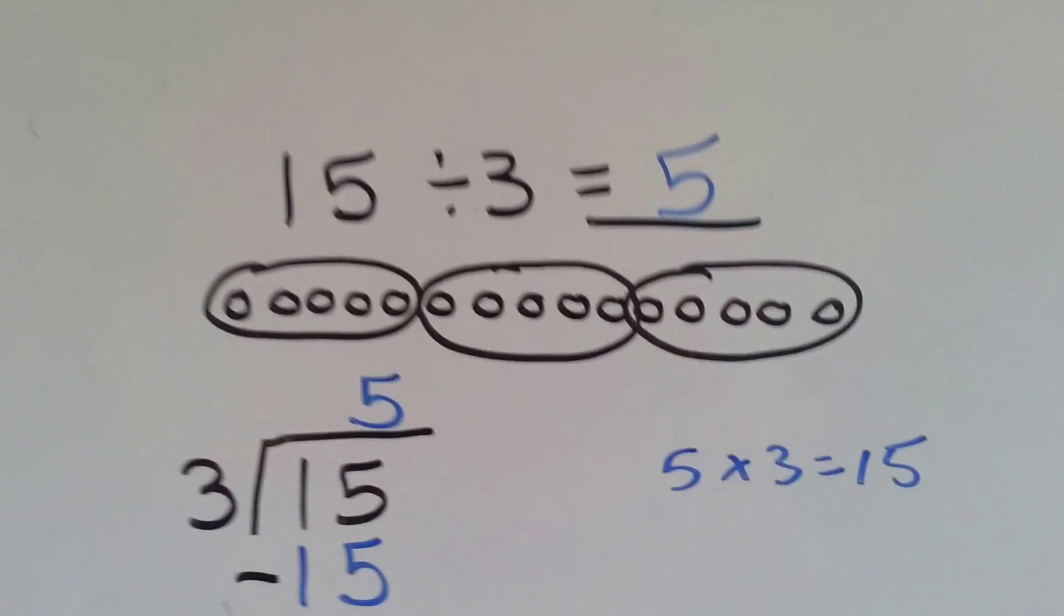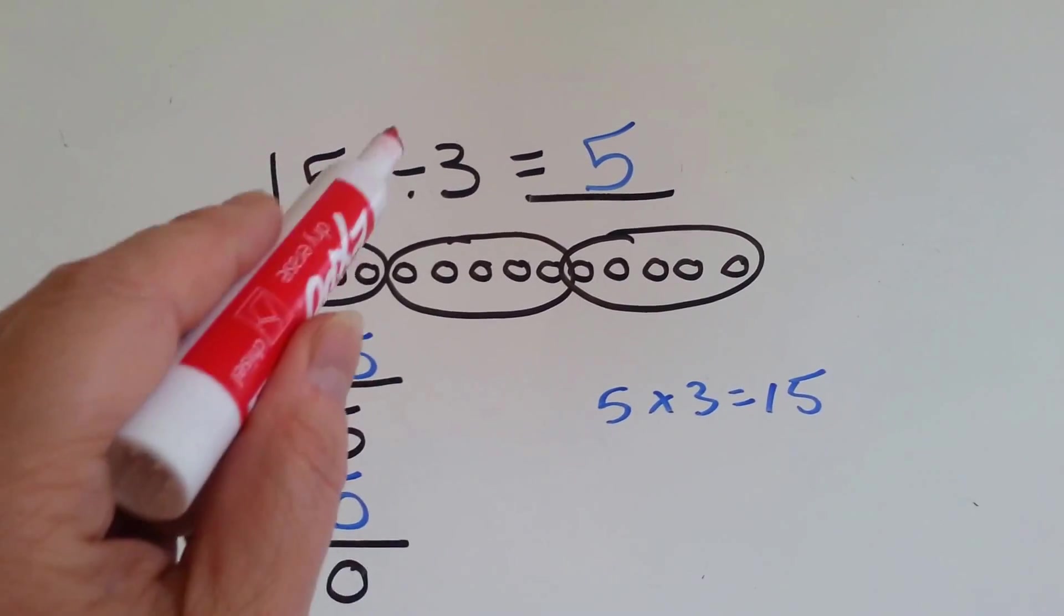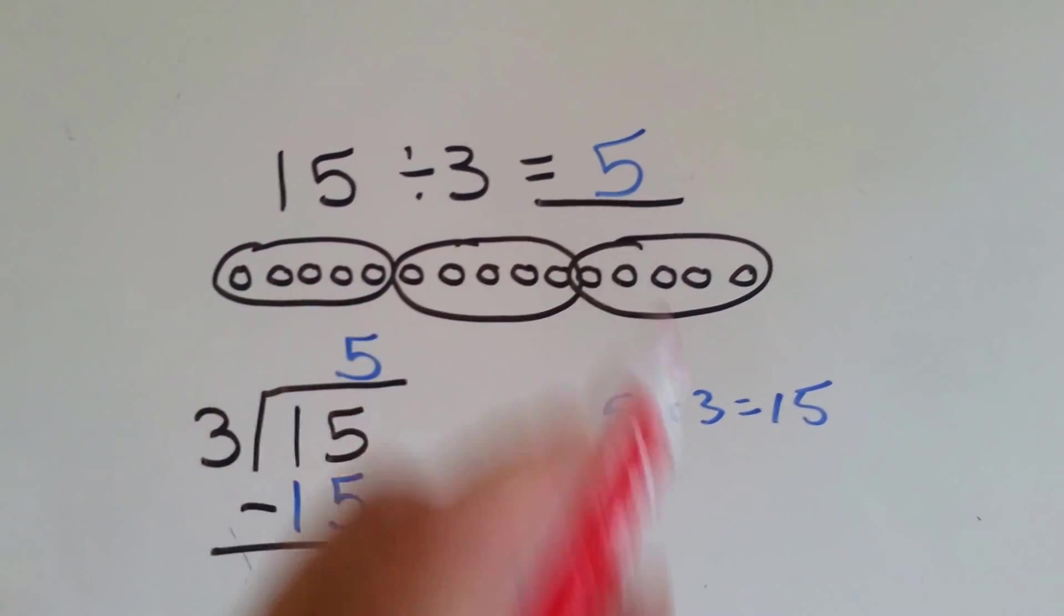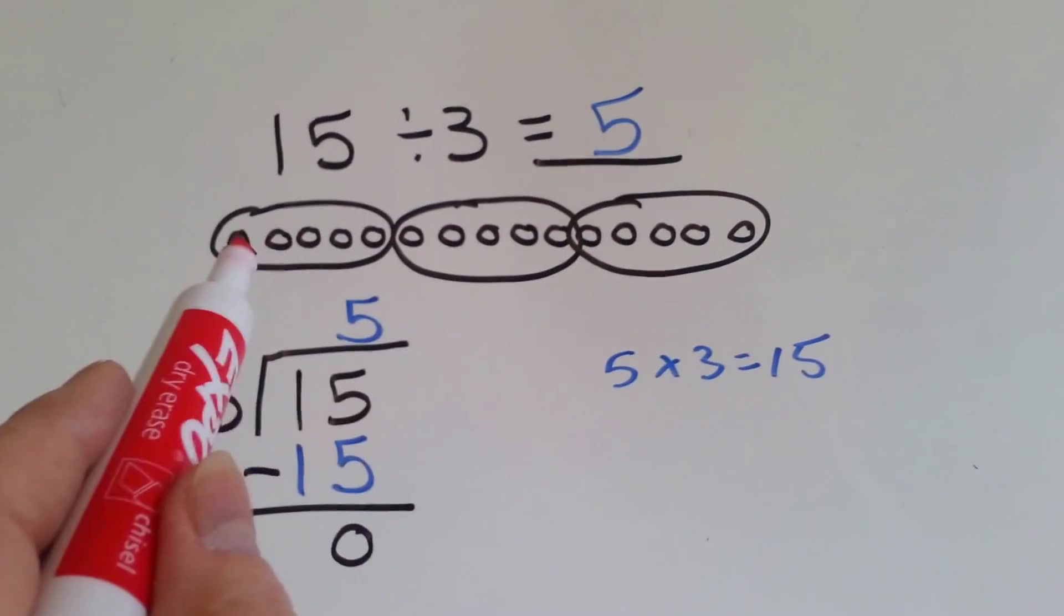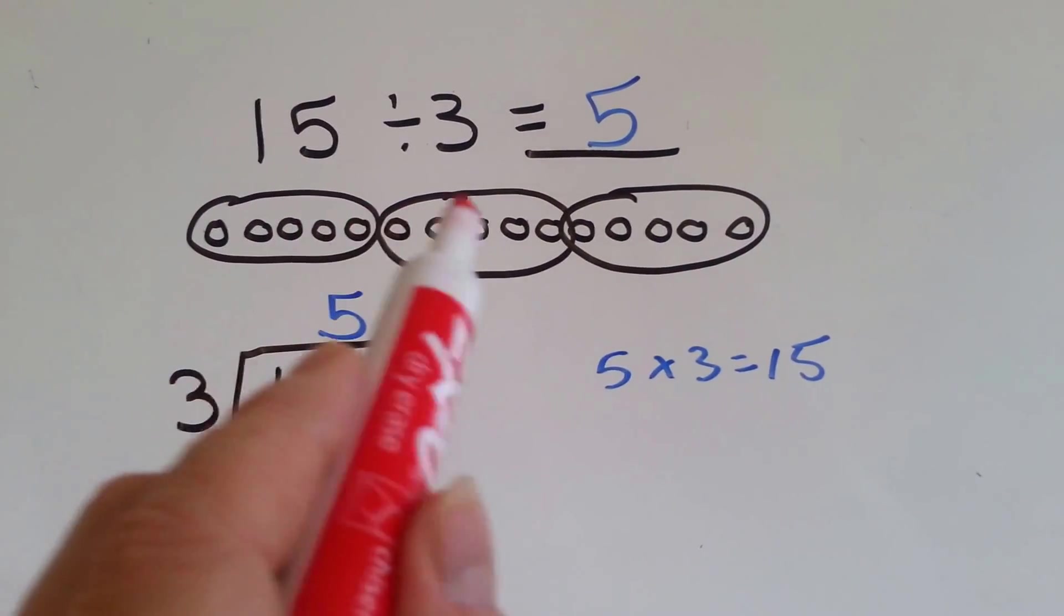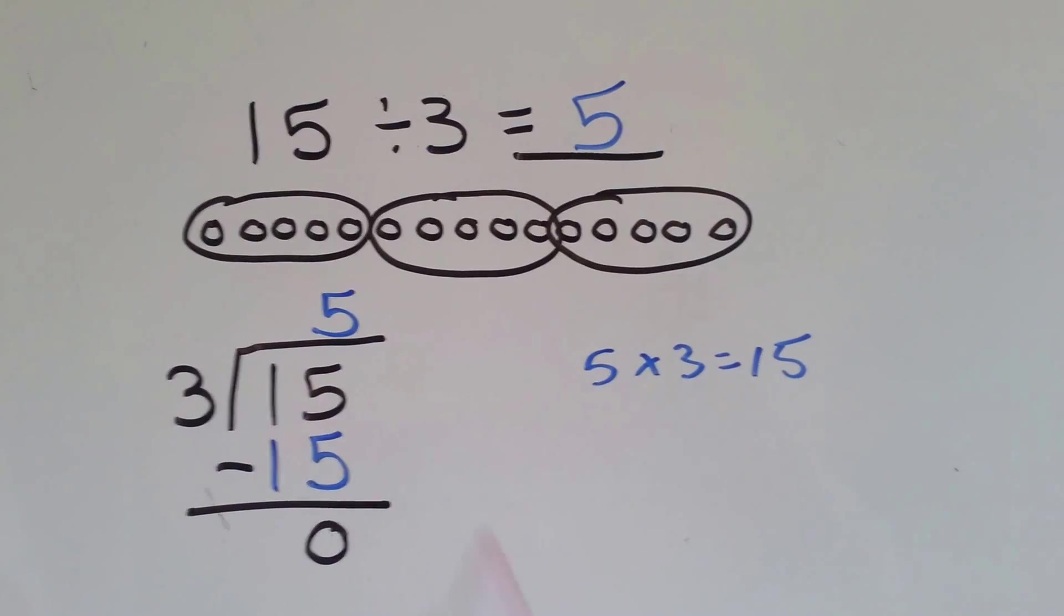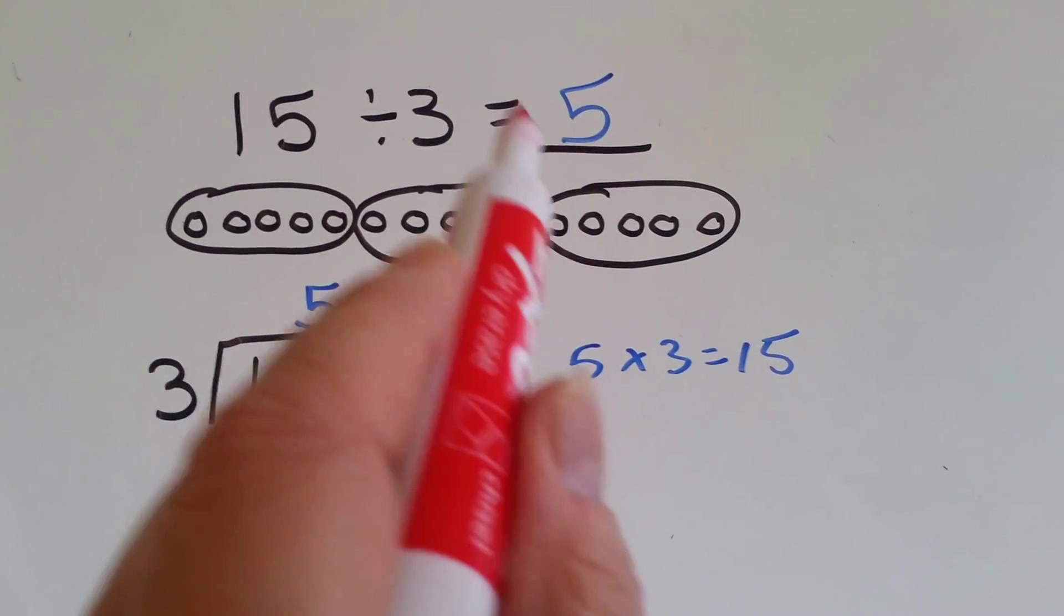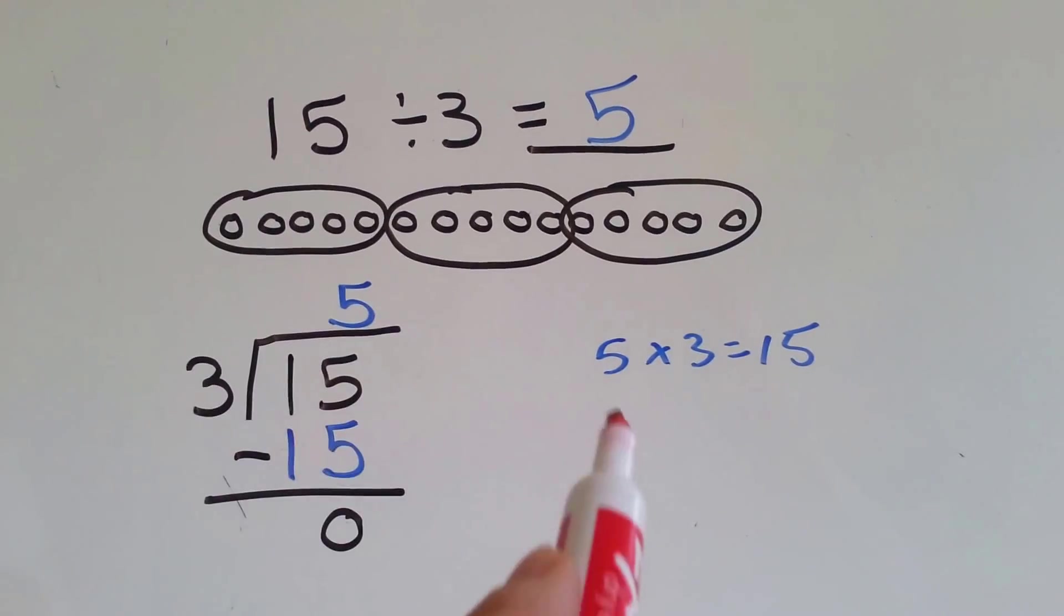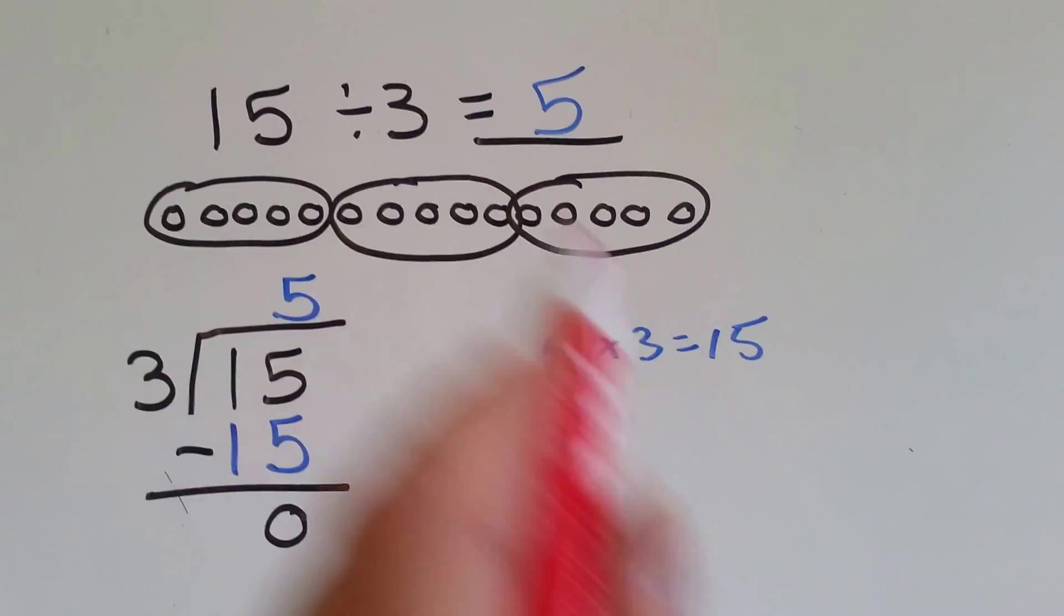So let's try another one. 15 divided by 3 equals 5. We have 15 circles. We divide it into 3 groups, and there's 1, 2, 3, 4, 5 in each group. 15 divided by 3 equals 5 is the same thing as 5 times 3 equals 15. It's a fact family.